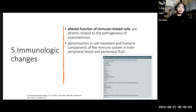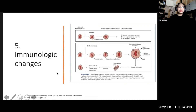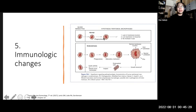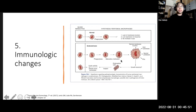The primary immunologic change involves alteration in the function of peritoneal macrophages prevalent in the peritoneal fluid of patients with endometriosis. In women without endometriosis, monocytic-type macrophages have a short lifespan and very limited function. However, in patients with endometriosis, there are more peritoneal macrophages that are larger and hyperactive, secreting multiple growth factors and cytokines that enhance the development of endometriotic lesions.